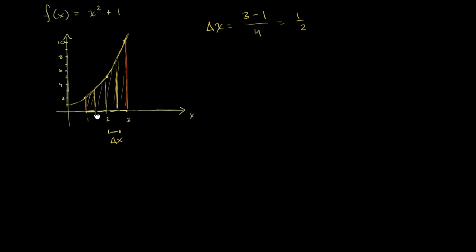So the first boundary between the first and second rectangle is at 1.5, then we go one half to 2, then to 2.5, and then one half to 3. Now for the height of the rectangles, I'm going to use the function evaluated at the left boundary of each rectangle. So for the first rectangle, the height is f of 1.